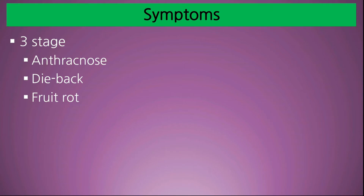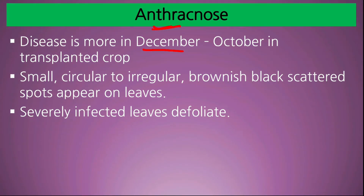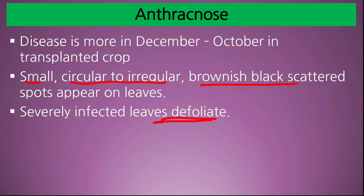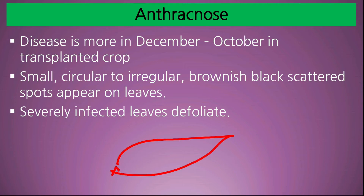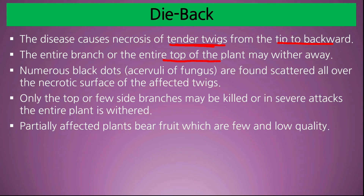Symptoms come in three stages. First is anthracnose stage, which mostly appears on leaves — small circular to irregular brownish-black scattered spots appear under leaves; severely infected leaves defoliate. Die back symptom: the entire branch or top of the plant may die; numerous black dots are found scattered all over the necrotic surface of affected twigs. Only the top or few sides of branches may be killed; in severe attack the entire plant dies.